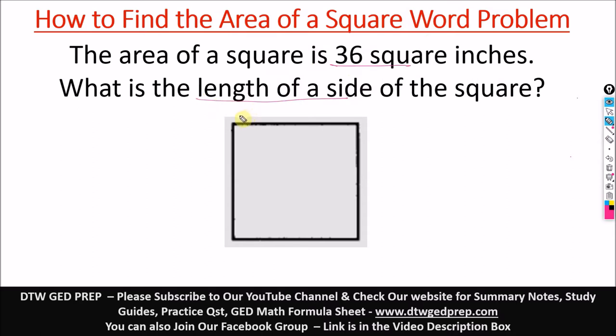So the GED sometimes doesn't give you direct questions like find the area of the square. They already know you know the formula which you can get from your math formula sheet, and the area of the square is just A equals s squared where s is a side, that's the value for a side.